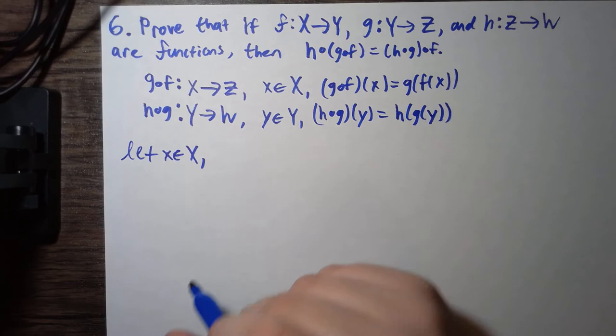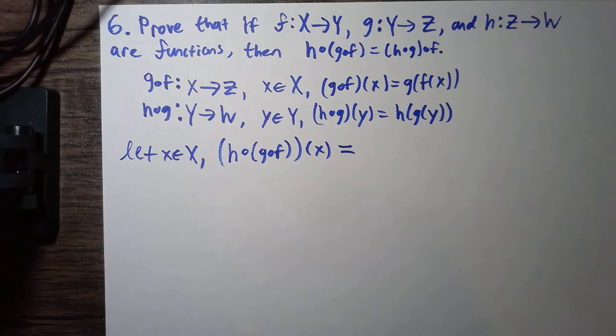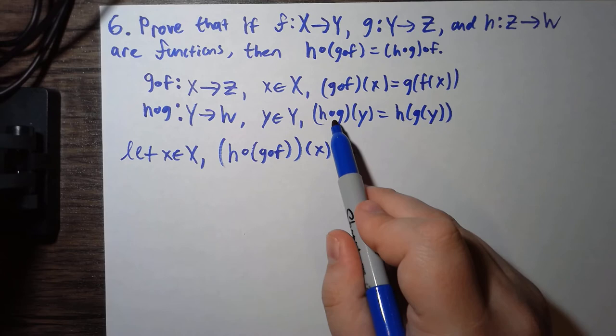Then if we look at (h∘(g∘f))(x), so what is this going to equal to? Well, since it's a composition of functions, recall that, so just by the way we have function composition here...